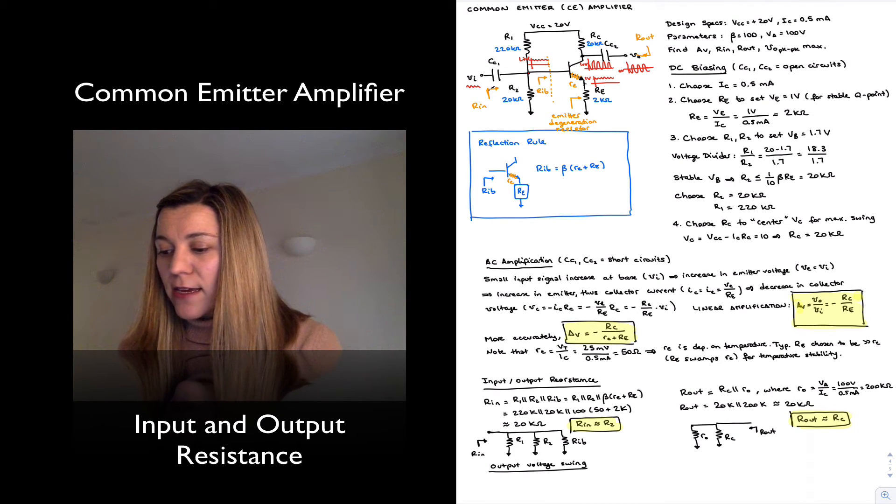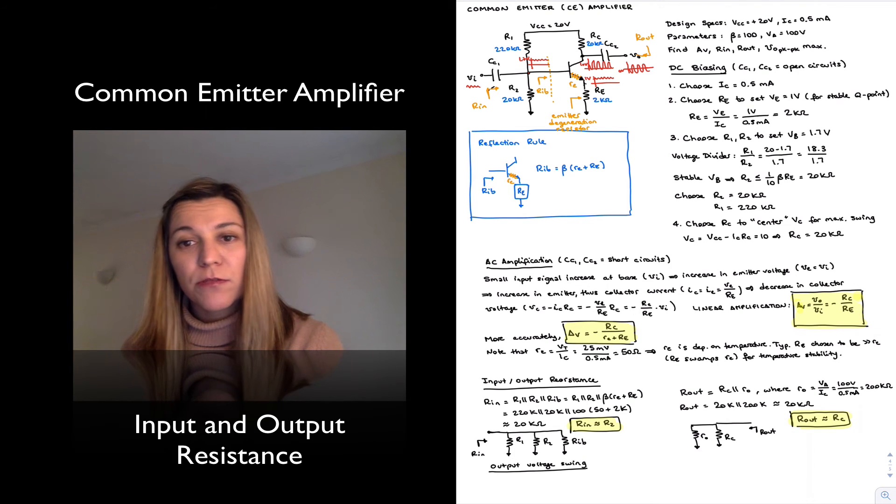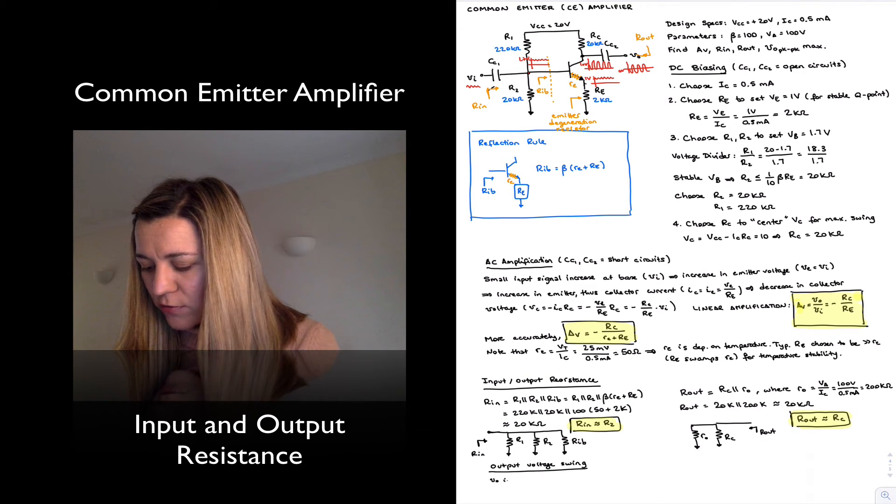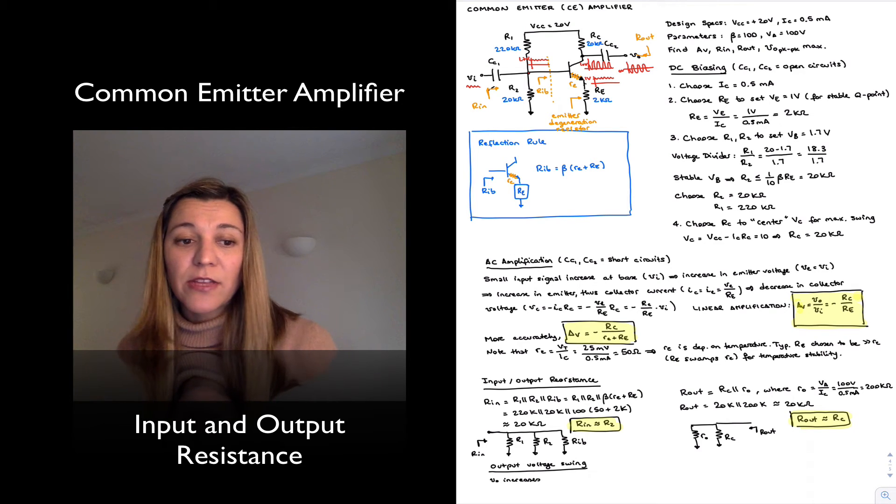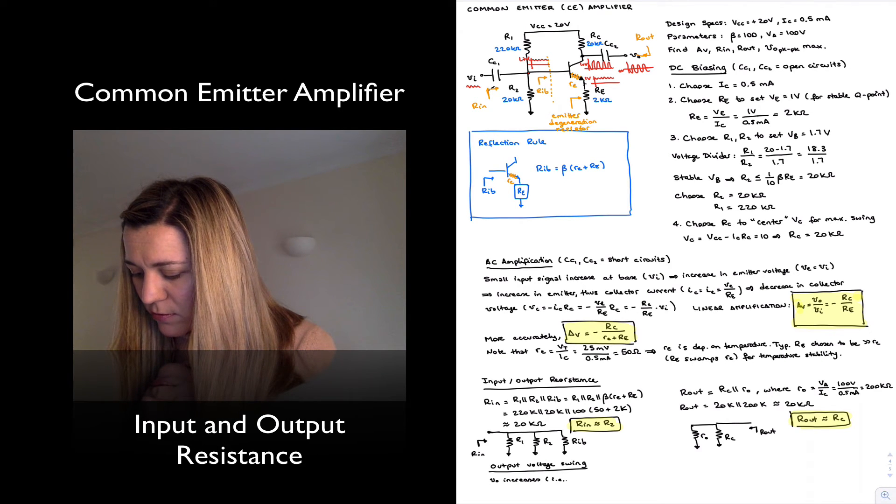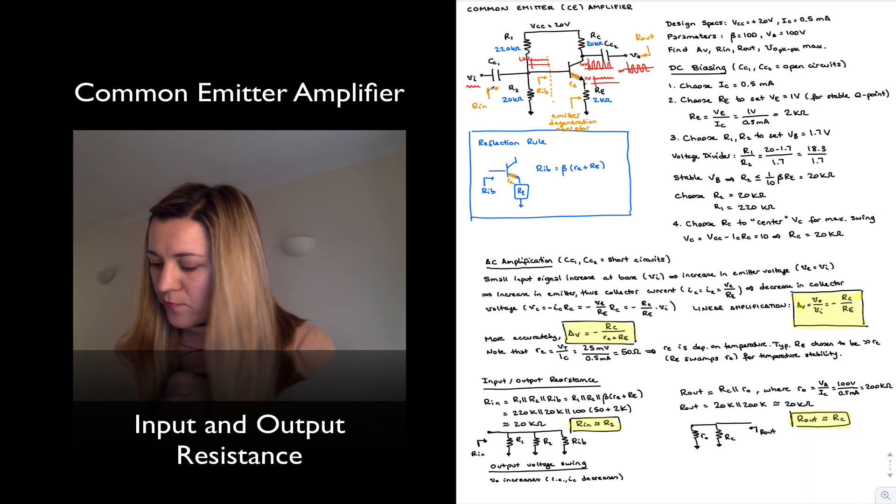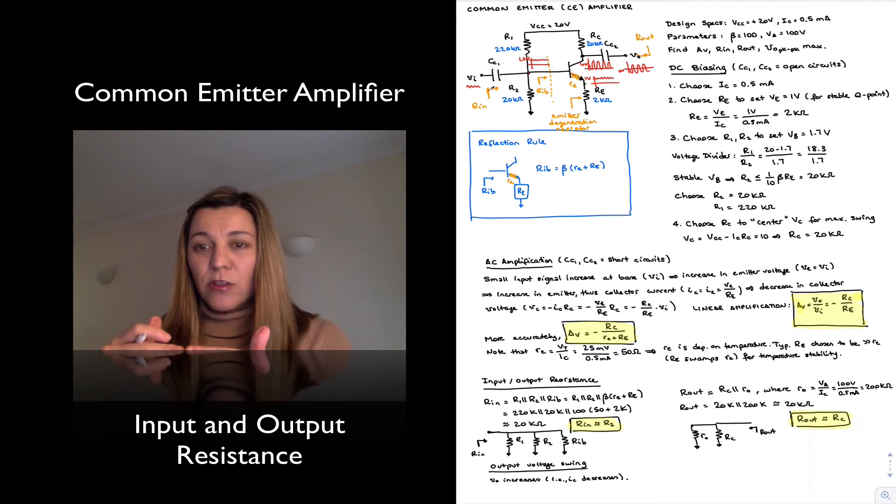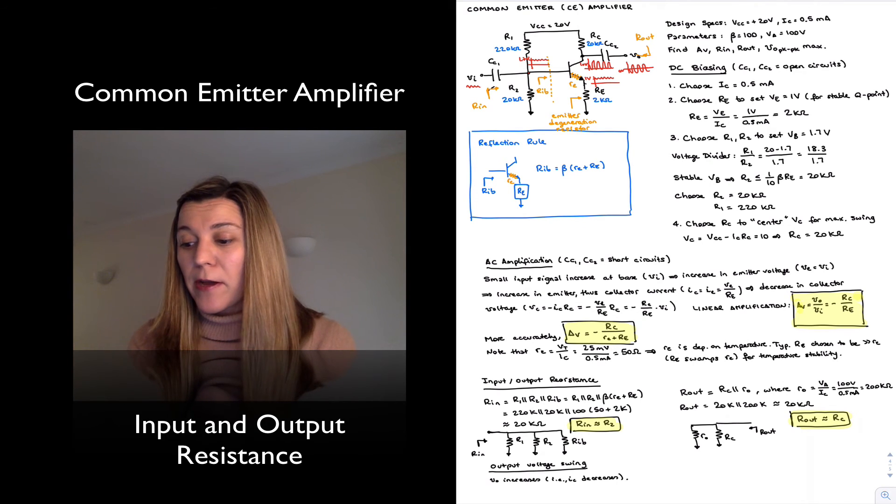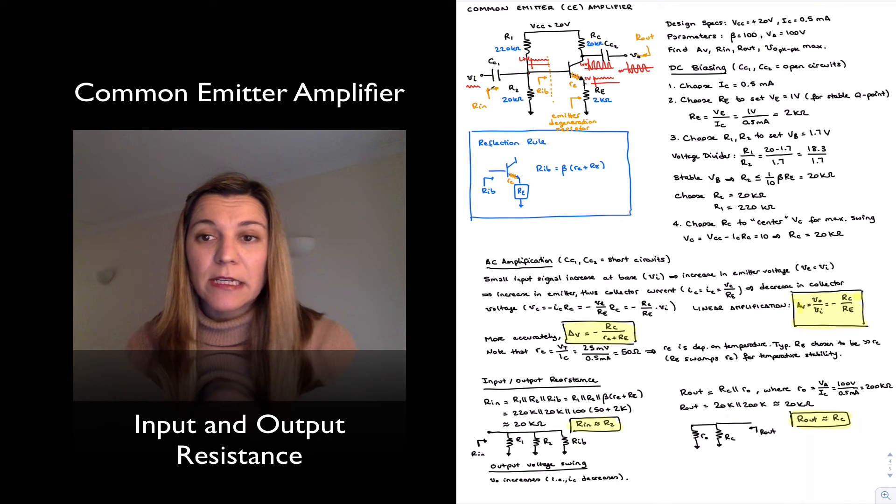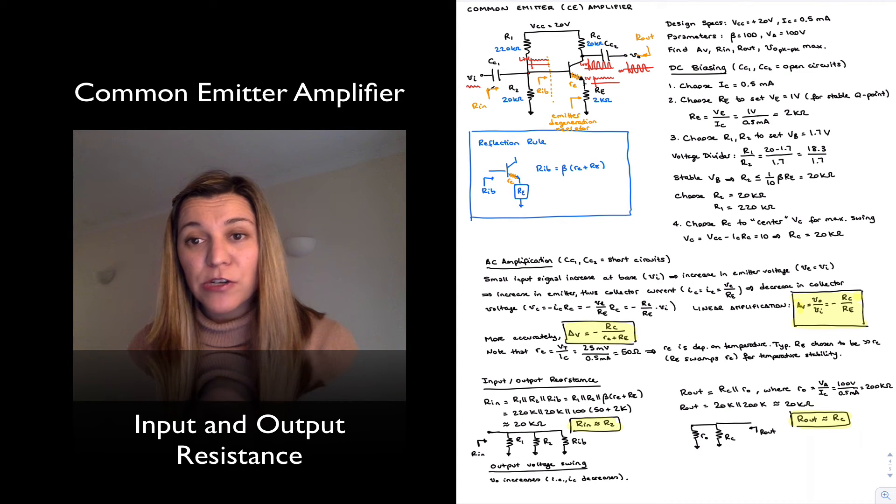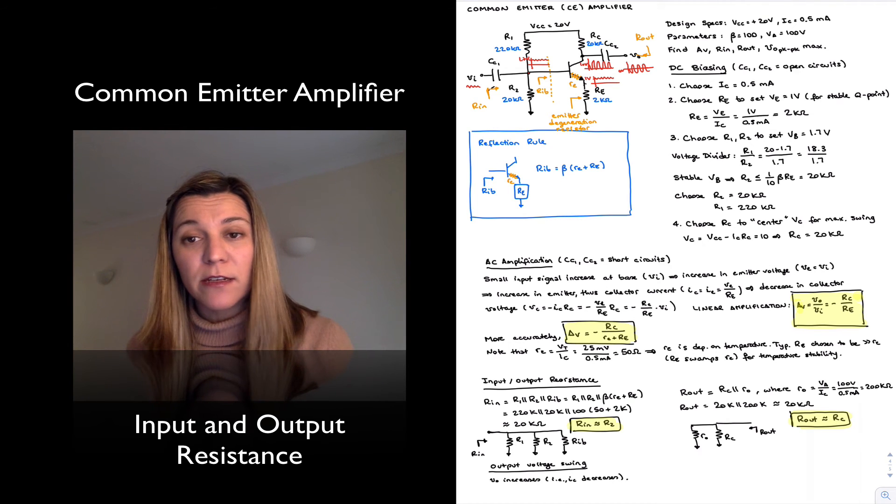Now, we have that the output voltage may increase or decrease, so it may swing in the positive direction or in the negative direction. If it's swinging in the positive direction and Vout increases, that's due to a decrease in IC. So as IC decreases, Vout can increase up to the point where it reaches VCC, basically.